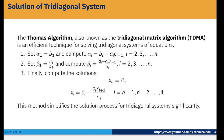What is the Thomas algorithm? First, set alpha_1 equal to b1, then compute alpha_i = b_i minus (a_i × c_{i-1}) / alpha_{i-1}, for i = 2 to n. Then set beta_1 = d1 / b1, and compute beta_i = (d_i minus a_i × beta_{i-1}) / alpha_i, for i = 2 to n. Finally, compute the solution: x_n = beta_n, and x_i = beta_i minus (c_i × x_{i+1}) / alpha_i, for i = n-1 down to 1. This method significantly simplifies the solution process for tri-diagonal systems.